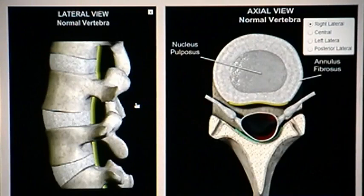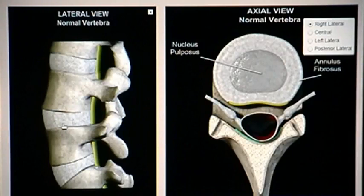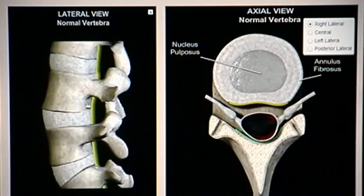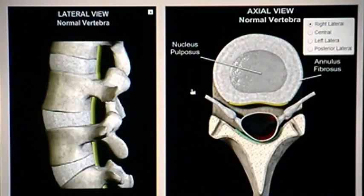Over here to the side, once again these are the vertebrae and these are the discs that fit between them — the shock absorbers. These discs are important not only for shock absorption but also to provide a spacing mechanism between the vertebrae, which provides for this large opening known as a foramen. Foramen is simply a Latin word meaning large hole, and this hole is where the nerves exit through the spine out into the body.